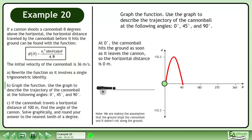At 0 degrees, the cannonball hits the ground as soon as it leaves the cannon, so the horizontal distance is 0 meters. Note that we are making the assumption that the ground stops the cannonball and it doesn't roll along the ground.